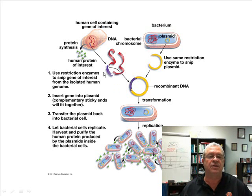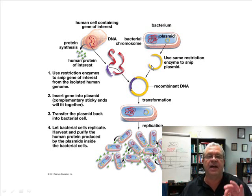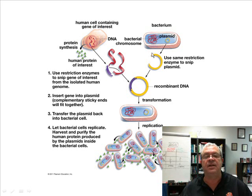We have a few copies of this isolated HGH gene, set aside in a test tube. Over here we have a plasmid being extracted from a bacteria cell and used in this procedure — though researchers will typically buy a special designer plasmid. They use the same restriction enzyme to snip the plasmid as was used to cut out the HGH gene. This creates complementary sticky ends.